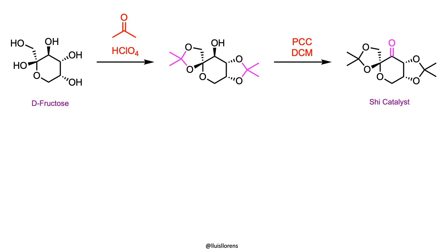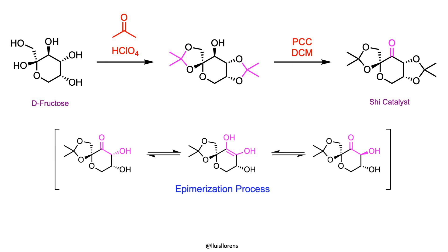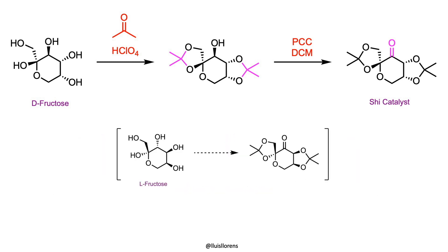Also, the presence of fused rings or quaternary centers alpha to the carbonyl group minimizes epimerization of the stereogenic centers. Besides, its enantiomer can as well be prepared from L-fructose.